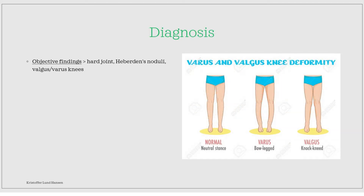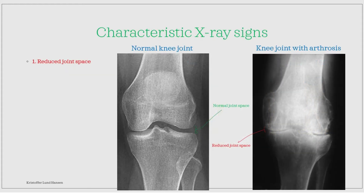When it comes to diagnosis, objective findings include a hard joint, Heberden's noduli, and valgus or varus deformation of the knee, which is very commonly seen. X-rays should always be performed, as you can easily show the typical signs of osteoarthrosis — and these can be seen even before actual clinical signs appear. The first X-ray sign is a reduced joint space, due to the destruction of cartilage and remodeling of the bone, which causes the space to narrow over time.